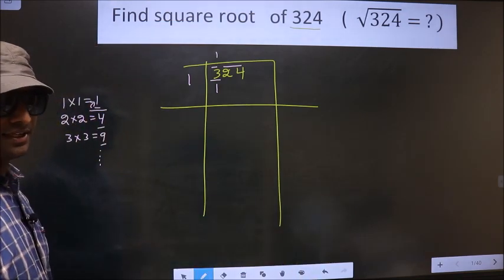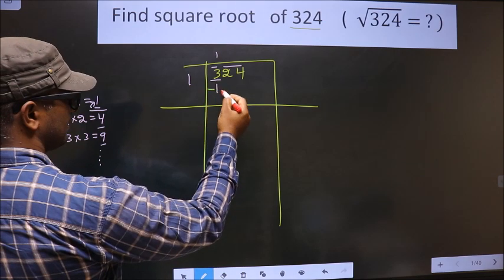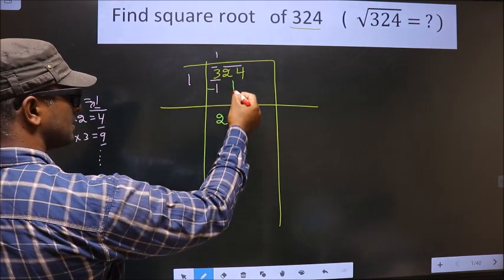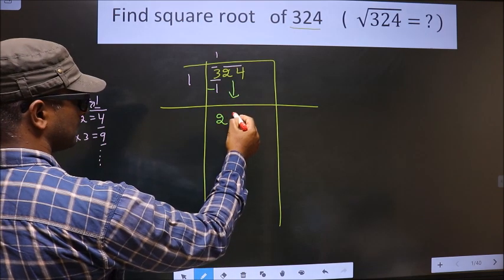Okay, next. Now you subtract here. 3 minus 1 is 2. Now this pair, as it is, it will come down.